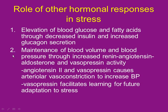Other hormonal responses to stress: blood sugar and fatty acids go up. Insulin is suppressed — cortisol opposes insulin while glucagon, which raises blood sugar, gets turned up. So in stressful situations you might look like a diabetic. Maintenance of blood volume and pressure occurs through increased renin, angiotensin, and aldosterone via the RAAS.